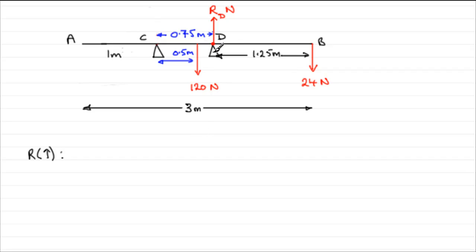So resolving upwards, we have R_D, and then the 120 and 24 that act in the opposite sense to the positive direction. So that's going to be minus 120 and minus 24.